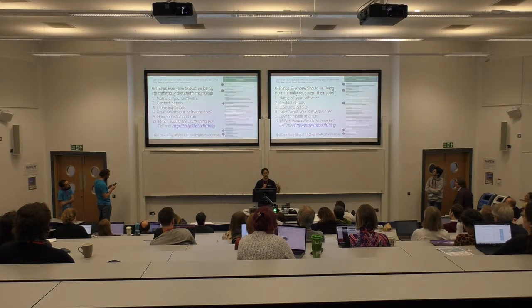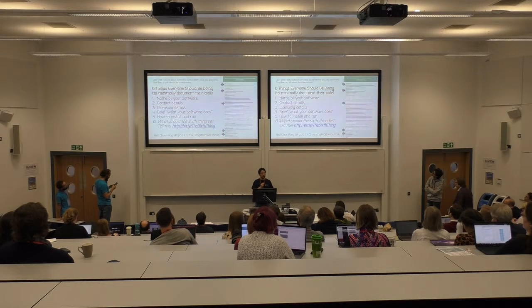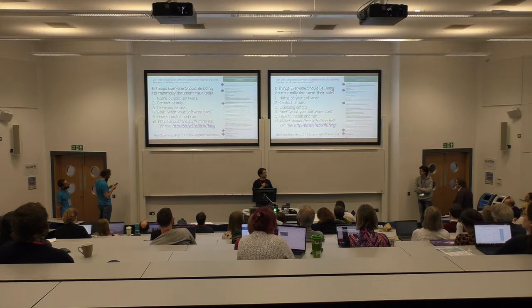So after you've talked about the name of your software, your contact details and licensing details, a brief description of what your software does — maybe a one-liner — and how to install and run it, what should the sixth thing be?